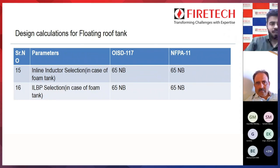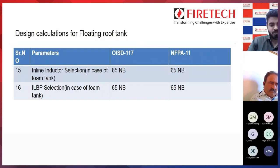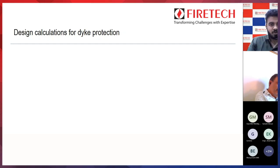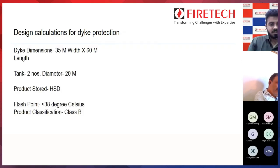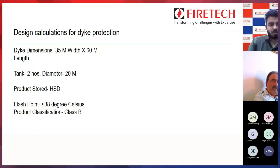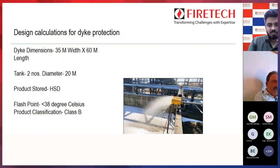That covers the fixed roof tank and floating roof tank calculations. Now, for spill fire — we need to understand the design calculations for dike area protection. We are considering a dike with width 35 meters and length 60 meters. Inside the dike there are two tanks of diameter 20 meters. Product stored is HSD, flash point is less than 38 degrees Celsius, and product classification is Class B.